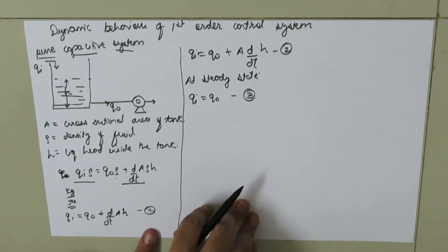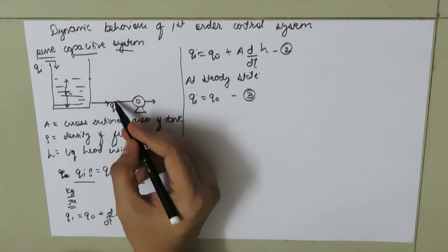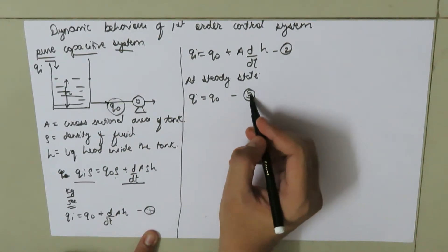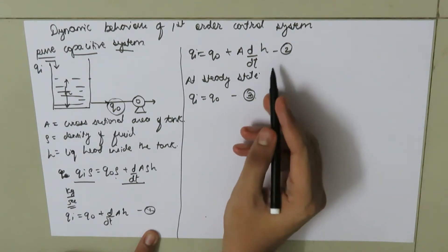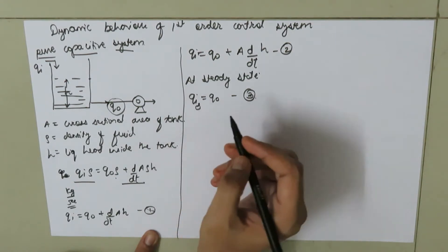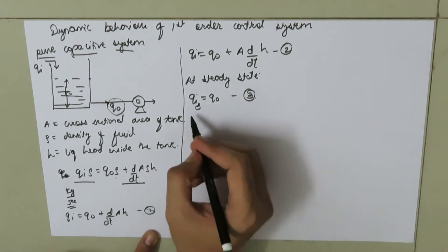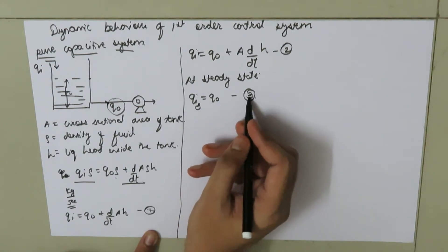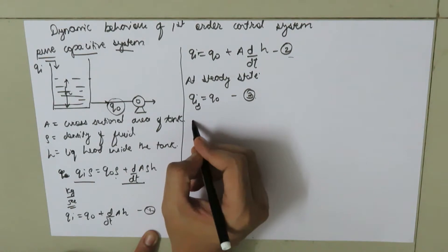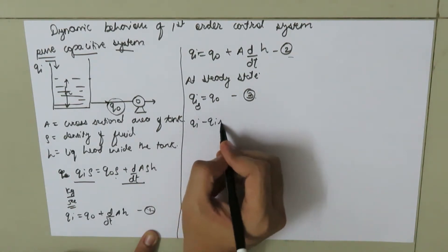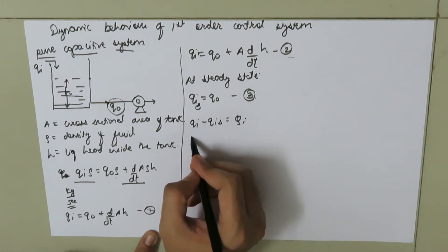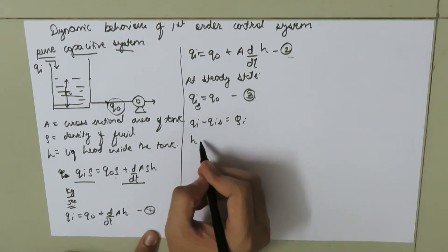In the case of the pure capacity system, the volumetric flow rate at the outlet of the tank is constant. If we subtract equation number three from equation number two and introduce our deviation variables — using subscript s for steady state — then qi minus qi_s equals capital Qi, and h minus h_s equals capital H.